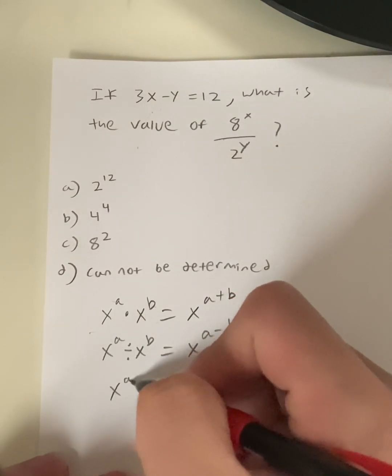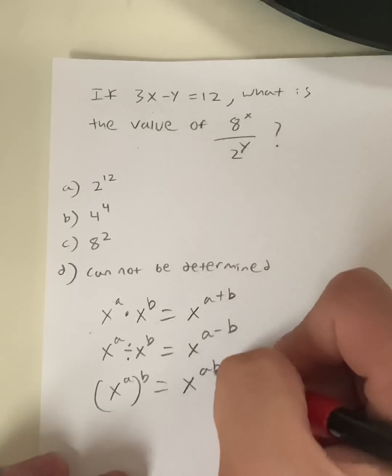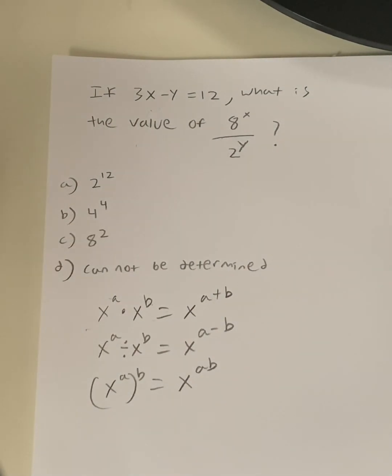And lastly, the third rule is (x^a)^b. This equals x^(a×b). So as long as you remember these three exponent rules, you should be good with any exponents question.